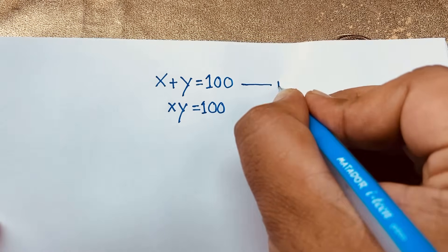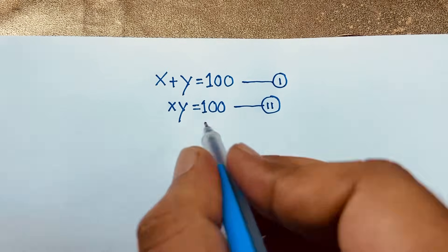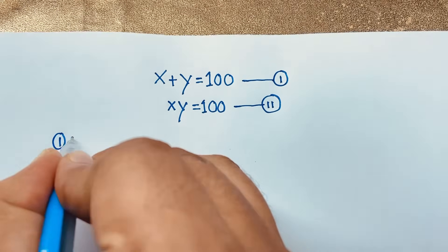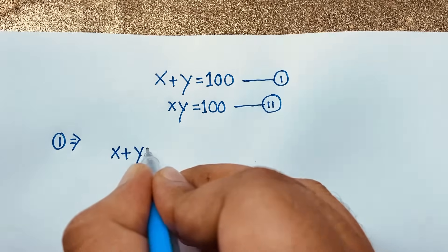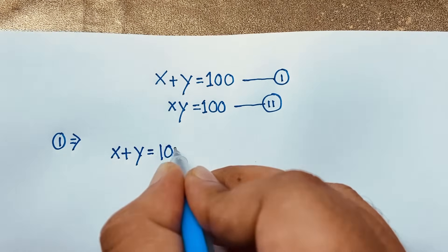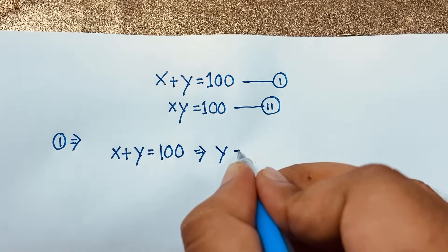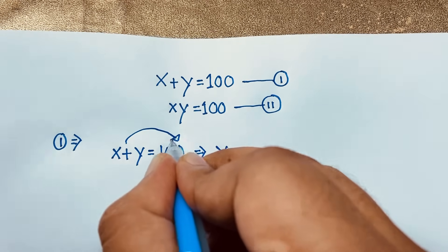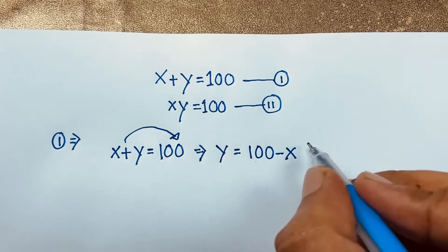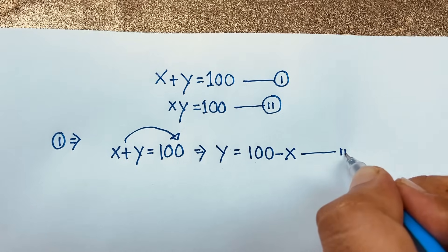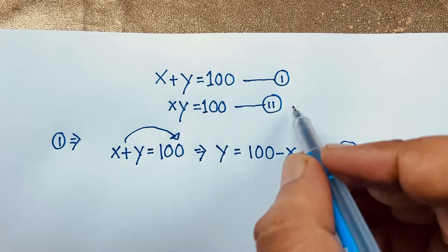First of all, I can see this is our first equation and this is our second equation. Now if we take our first equation, it will be x plus y is equal to 100. If I move x to the other side, y will be 100 minus x. So we'll find out our third equation: y equals 100 minus x.